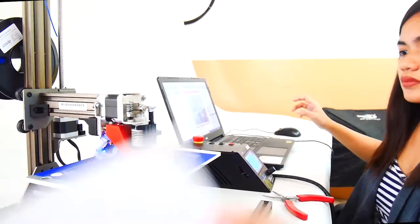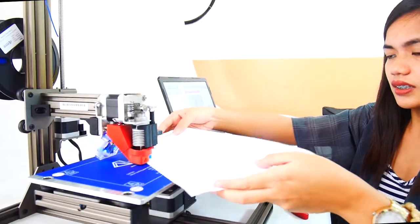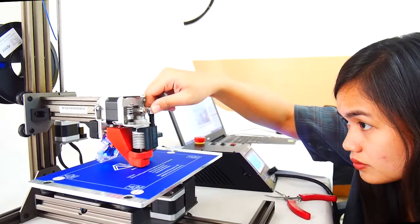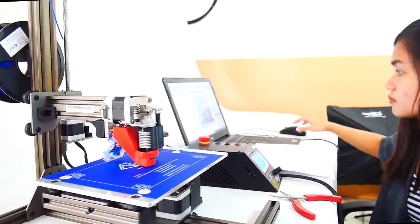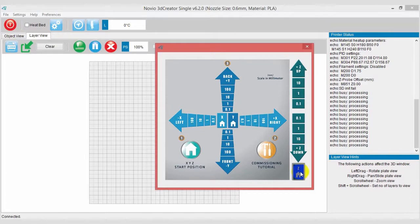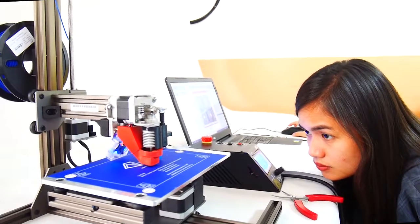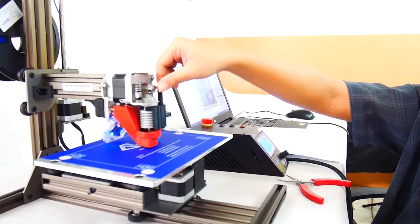If the extruder is pushing the plate too much, rotate the auto-level module's knob counter-clockwise to move the extruder up. Then click Z-home button. Repeat this process until a paper-thin gap is set.